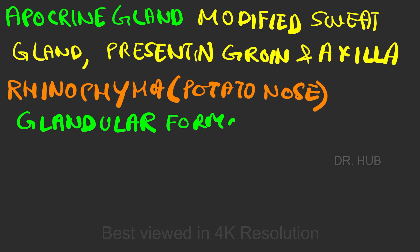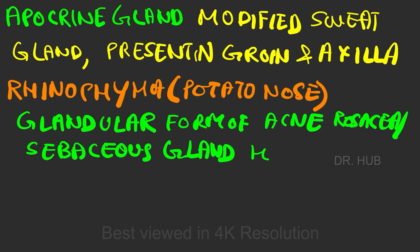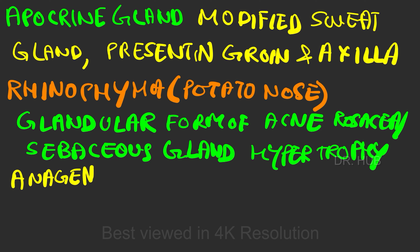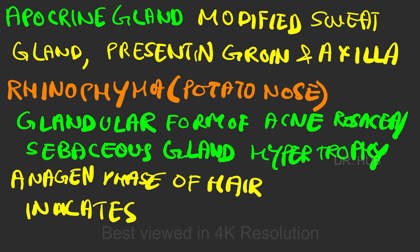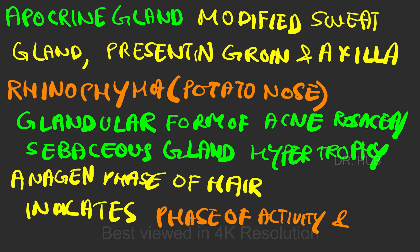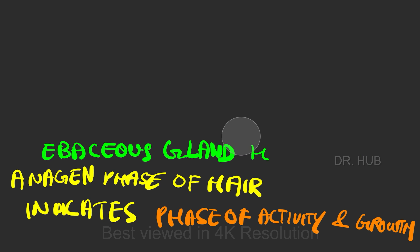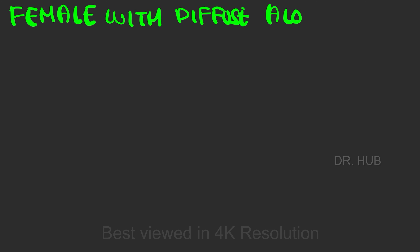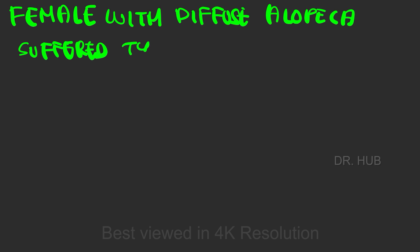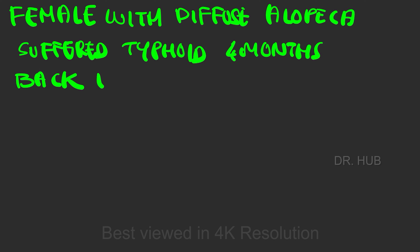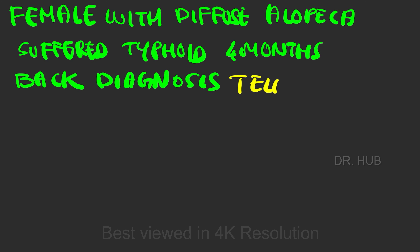Rhinophyma is nothing but potato nose. It is a glandular form of acne rosacea and sebaceous gland hypertrophy. The anagen phase of hair indicates the phase of activity and growth. A female with diffuse alopecia suffering from thyroid disorder four months back —